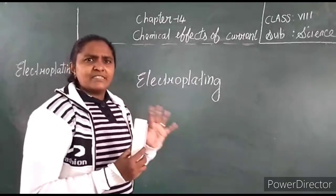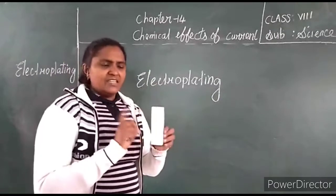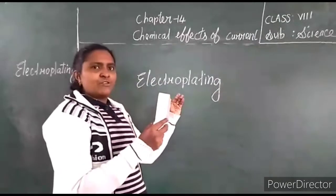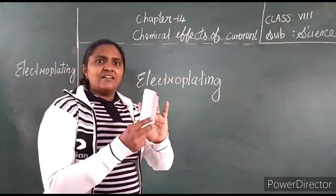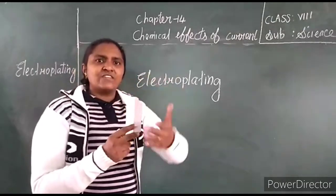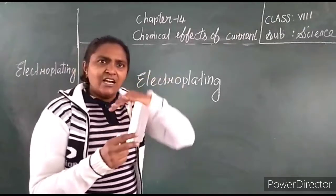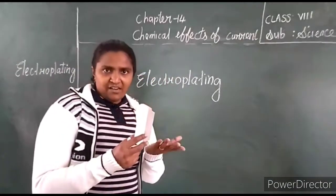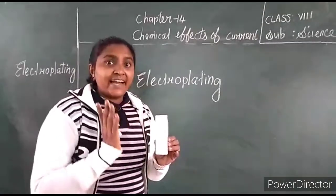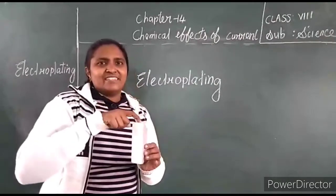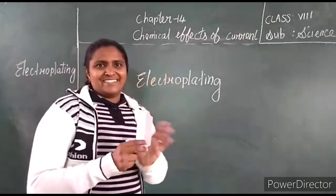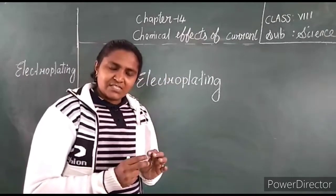Electroplating is the coating of any metal over another metal. This is one material — I want to coat this material with iron or copper. With the help of electroplating, we coat this material with another metal, such as copper, silver, or gold. This process is called electroplating.